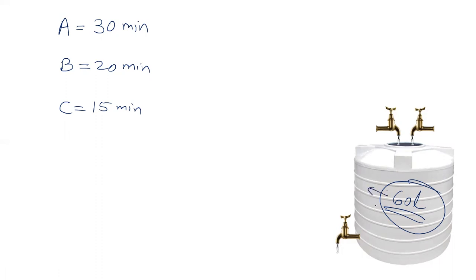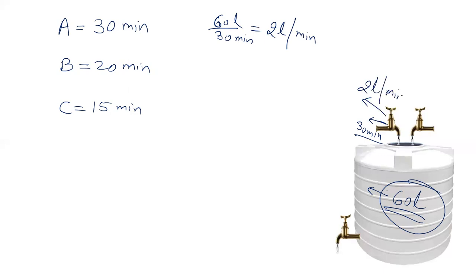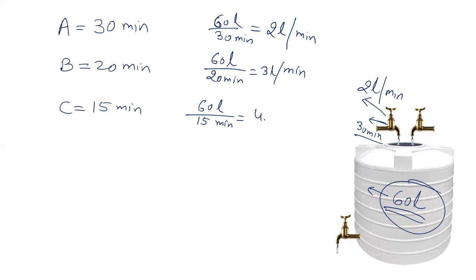If the capacity of the tank is 60 liters and pipe A can fill it in 30 minutes, that means per minute the rate of A is 60 divided by 30, which gives 2 liters per minute. Similarly, the rate of B is 60 divided by 20, which is 3 liters per minute. And the rate of pipe C, which is emptying the tank, is 60 divided by 15, which is 4 liters per minute.